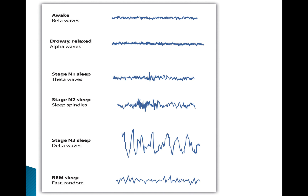When you're awake, we see beta waves. When drowsy and relaxed, we see alpha waves. As sleep gets deeper, you can see the change in patterns. In non-REM 3, delta waves indicate the deepest sleep, and in REM sleep, you see fast, random waves.